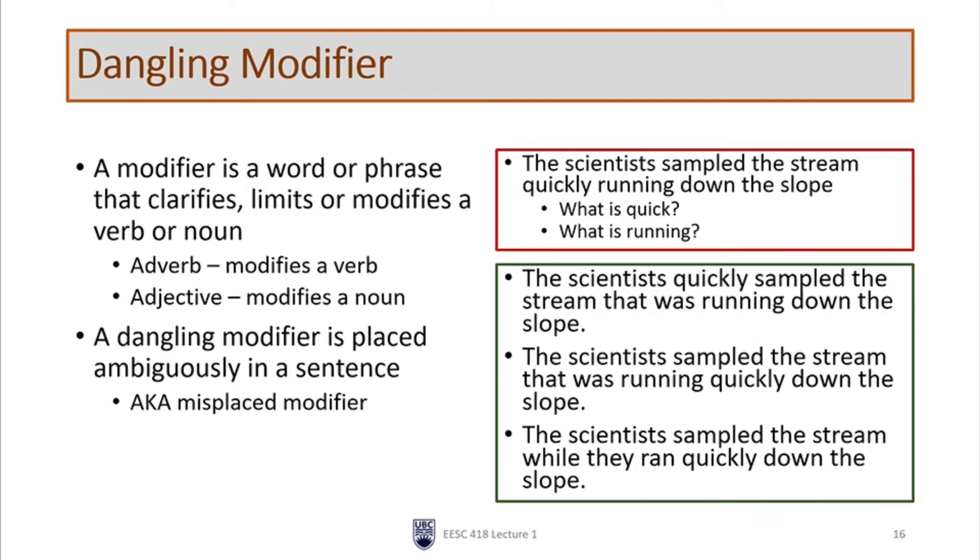And in the third sentence, the scientists sampled the stream while they ran quickly down the slope. In this case, the scientists are both quick and running while the stream is just being there. So depending on what you mean, you need to be very specific about where you place the modifier.